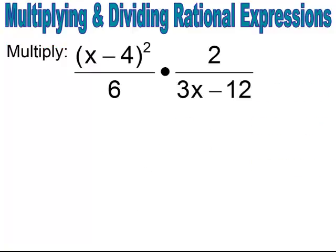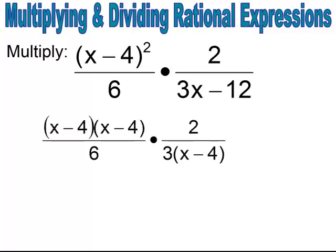Pause and try. I rewrite the numerator as x minus 4 times x minus 4 over 6, factor the GCF in the denominator of the second rational expression, then simplify and multiply across. I end up with x minus 4 all over 9, because I have 3 times 3.